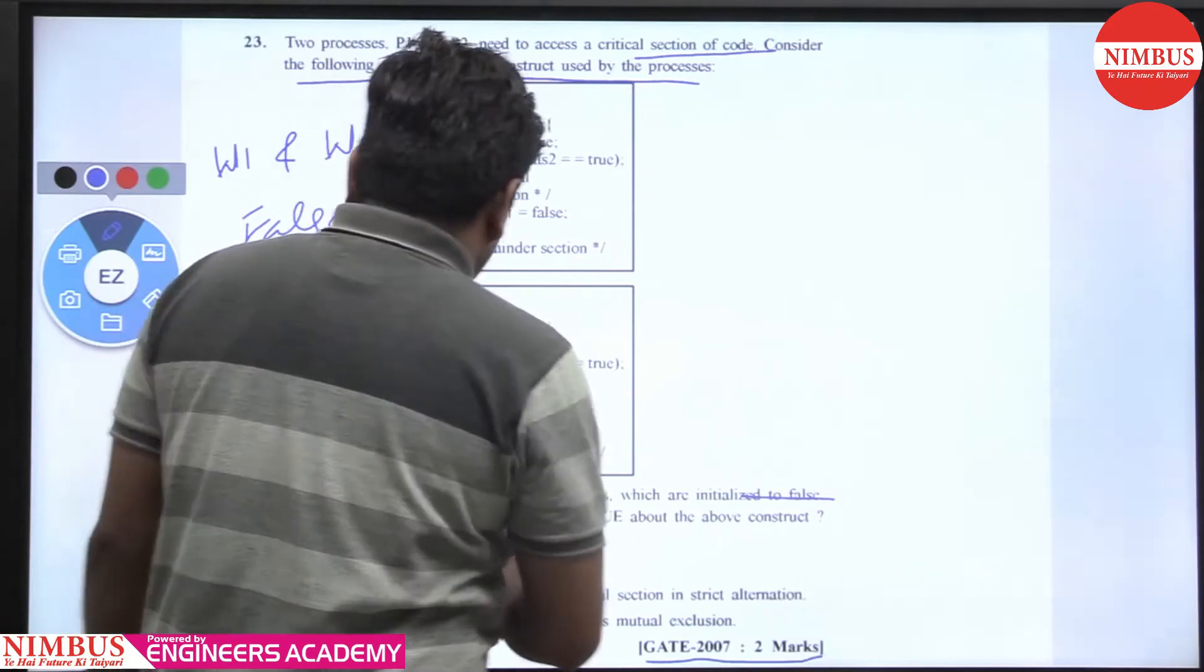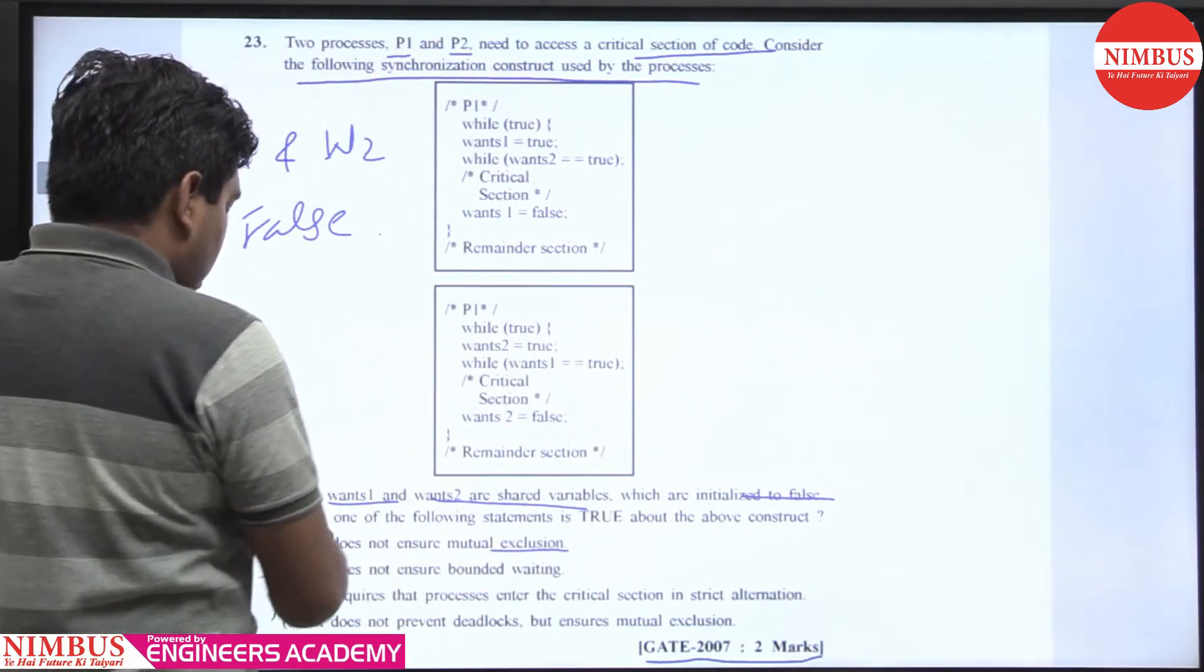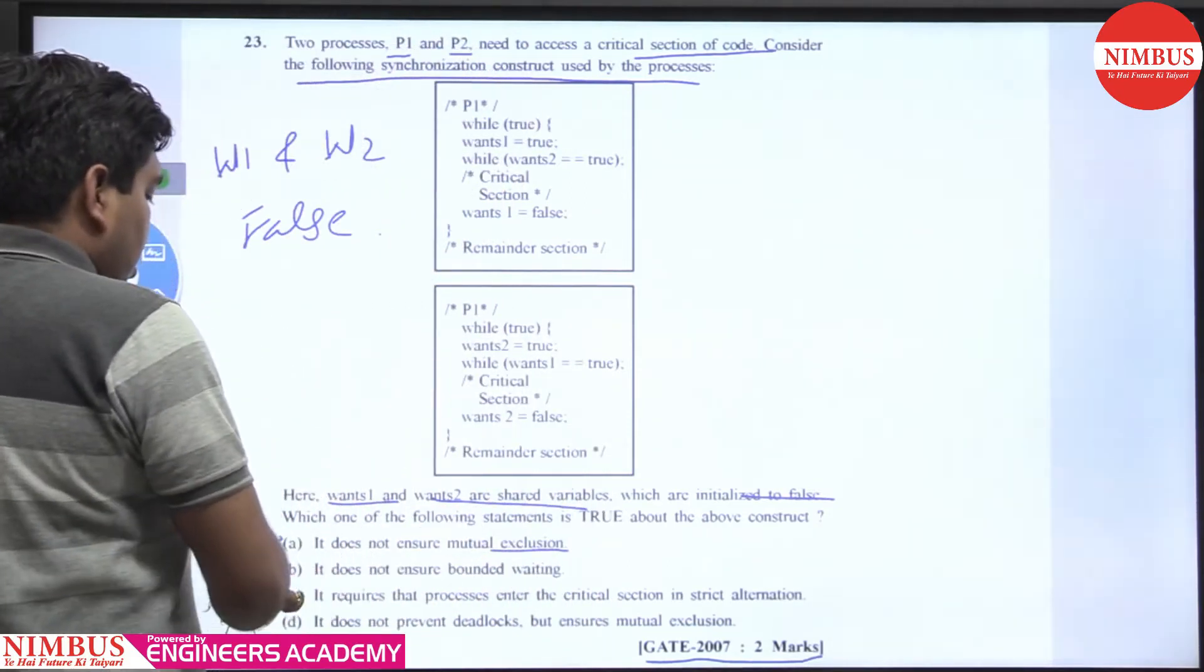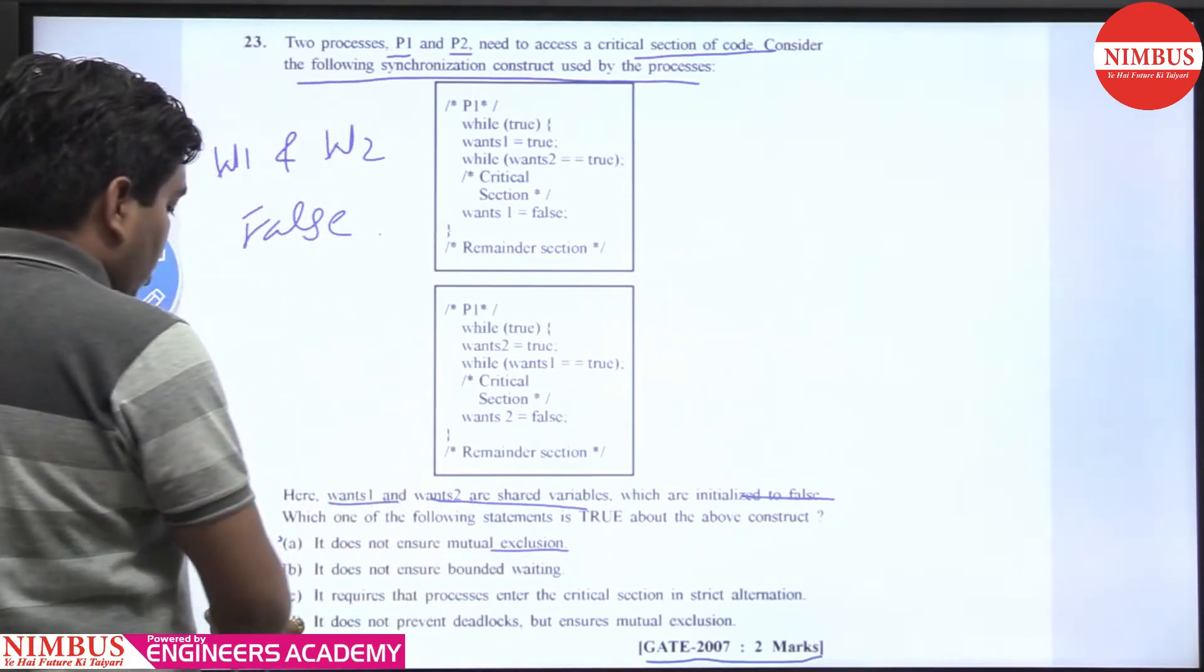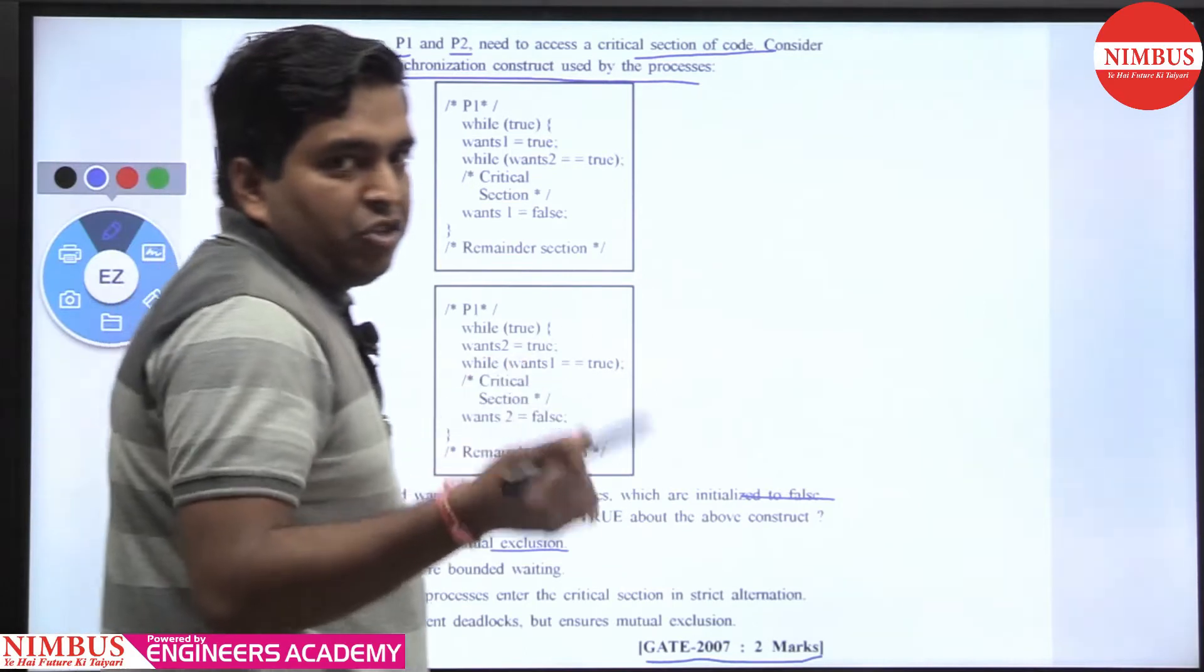First one is does not ensure mutual exclusion, does not ensure bounded waiting, it requires a process enter in a critical section in strict alternation, or does not prevent deadlock but ensure mutual exclusion.